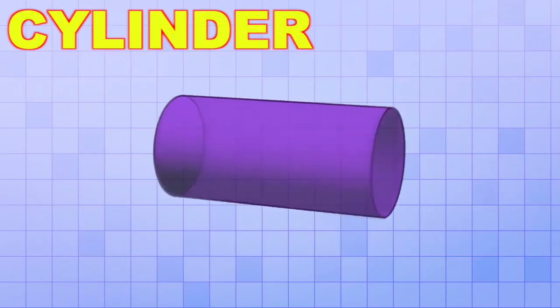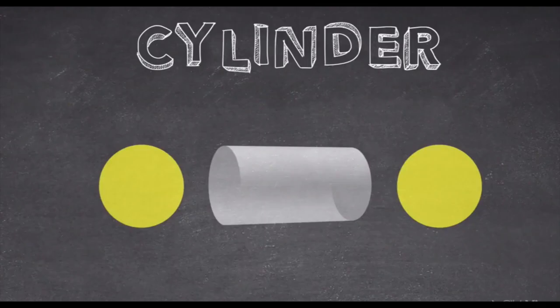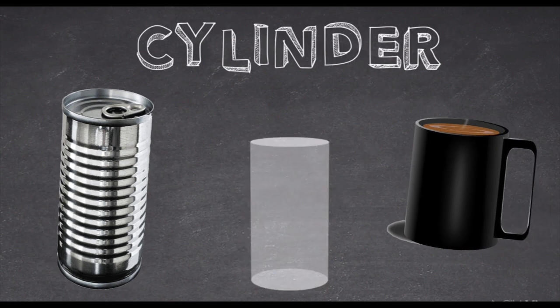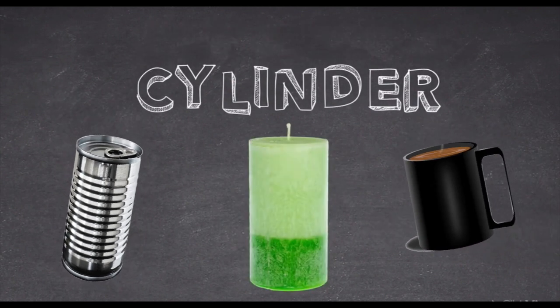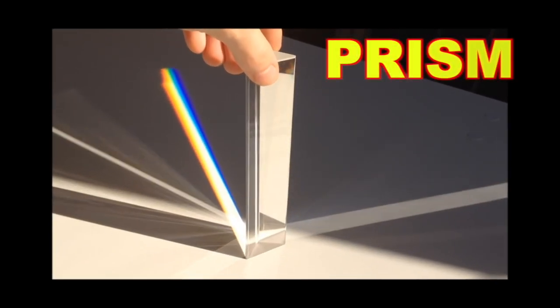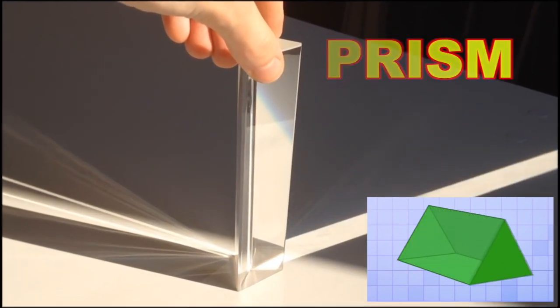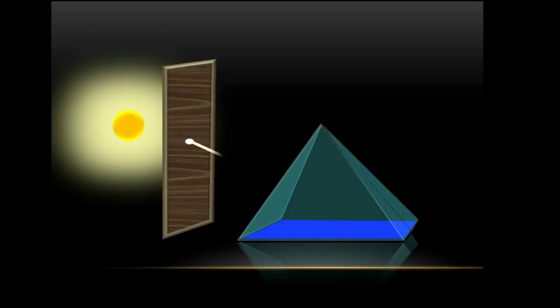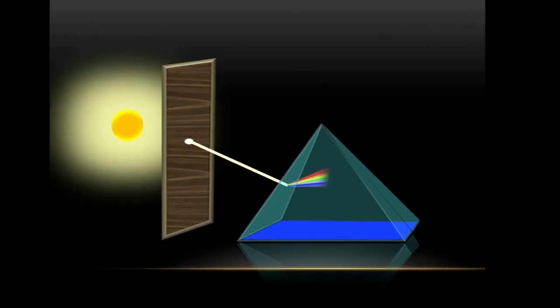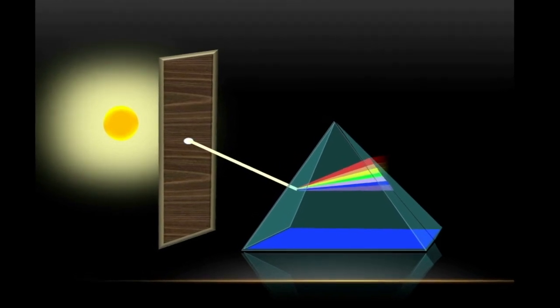Combine a circle and rectangle to make a cylinder. Cans, cups, and candles are cylinders. A prism is a 3D combo of a triangle and a rectangle. I use a prism to split white light into a rainbow of colors.